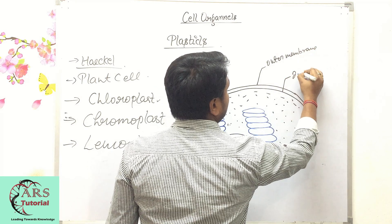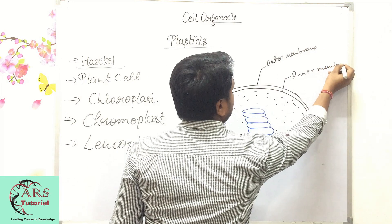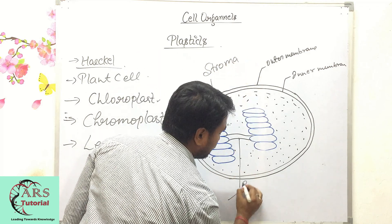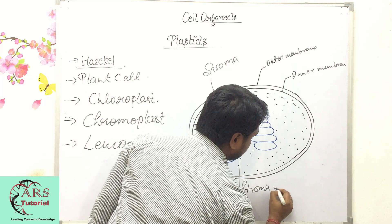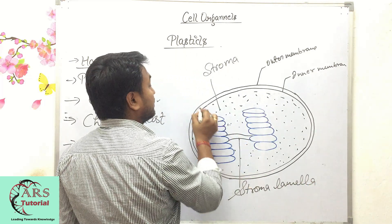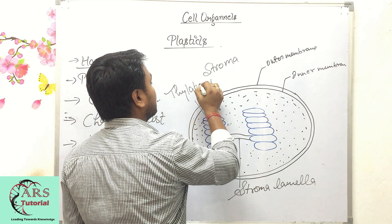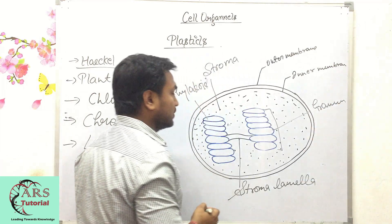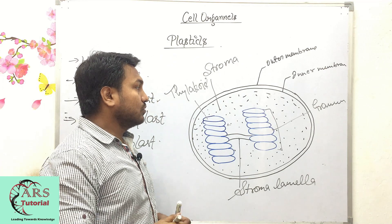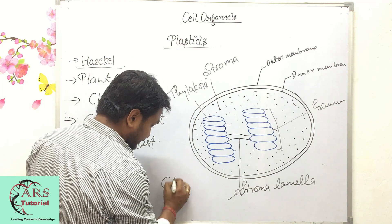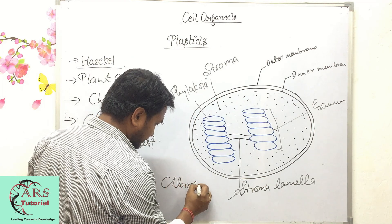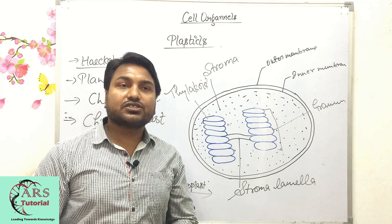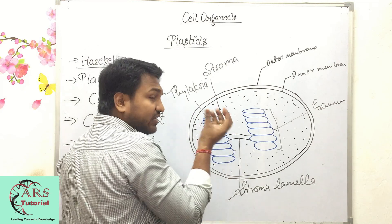In the chloroplast structure, labeling from outside in: outer membrane, inner membrane, stroma, stroma lamella, thylakoid, and granum. The thylakoid is a pebble-like structure, and a stack of thylakoids is called a granum. There are two types of photosynthetic reactions: light reaction and dark reaction.